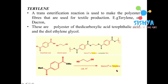Terylene or Dacron is formed by transesterification between terephthalic acid and ethylene glycol, leading to a polymer. The OH group is replaced by OMe; glycol remains with acid catalysis to give the product polyethylene terephthalate.